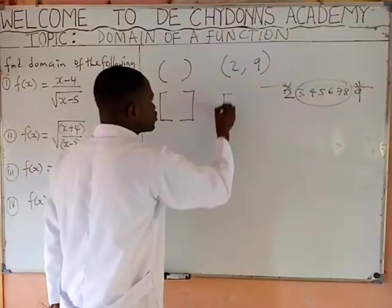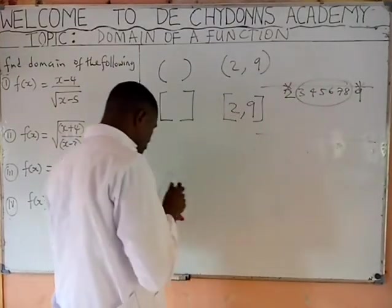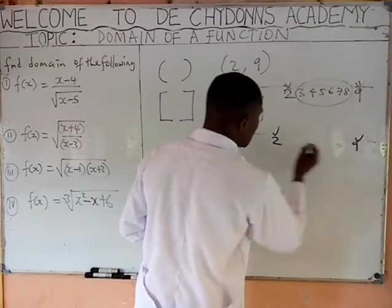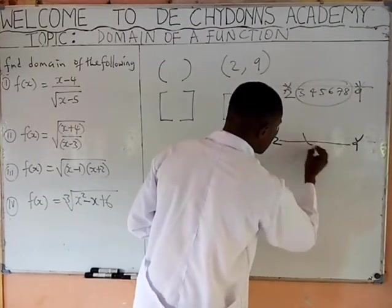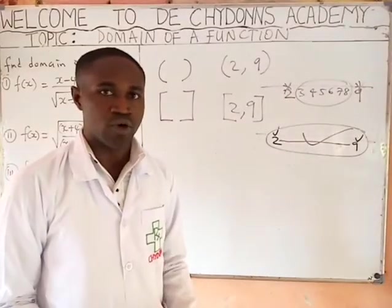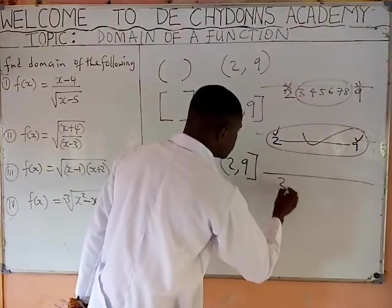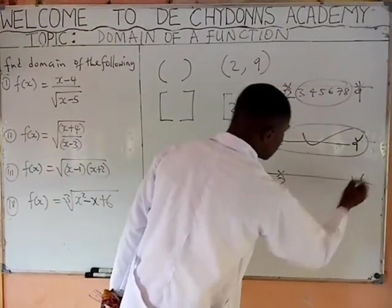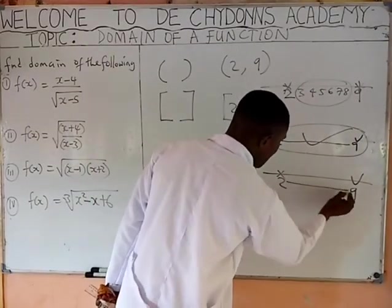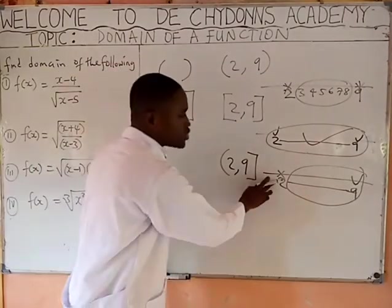Then if you have it with closed brackets, like [2, 9], it means that 2 is included, 9 is included, and all the numbers between 2 and 9 are also included — everything will be included. When you have it as (2, 9] — open bracket on the left, closed on the right — it means 2 is not included but 9 is included. Numbers from after 2 up to and including 9 are included, but 2 is not.